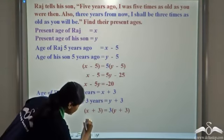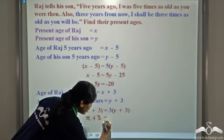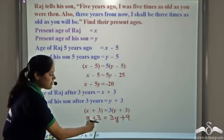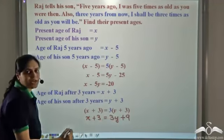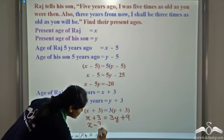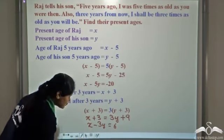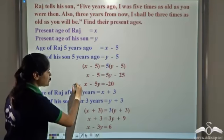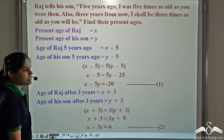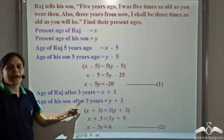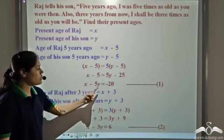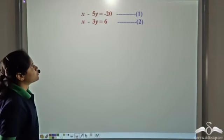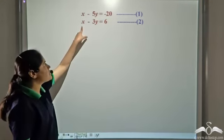Now we can simplify this. We get x plus three equal to three y plus nine. Transposing, we get x minus three y is equal to six. So let us call the first equation as equation one and this equation as equation two.